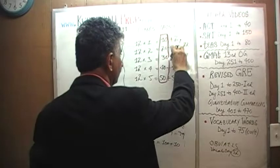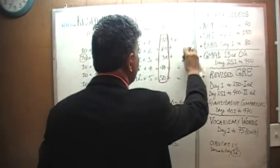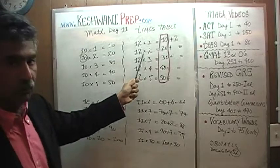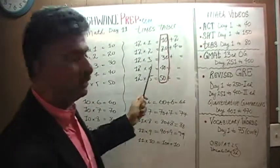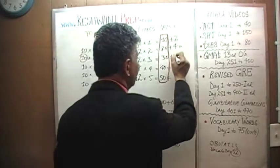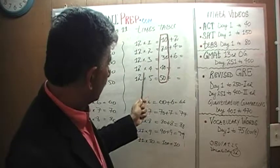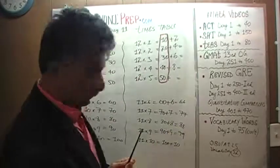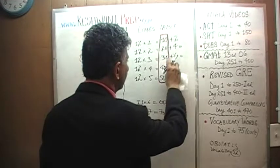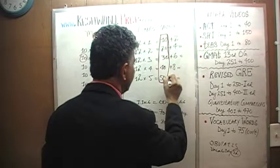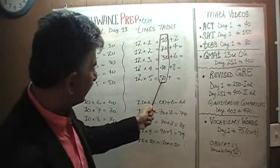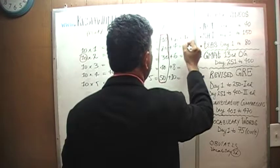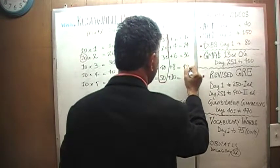12 threes are going to be 10 threes which is 30 plus two more threes which is 6, giving 36. 12 fours are the same as 10 fours — 40 — and then two more fours which is 8, giving 48. 12 fives are going to be 10 fives which is 50 plus two more fives which is 10, giving 60. So the answers are 12, 24, 36, 48, and 60.